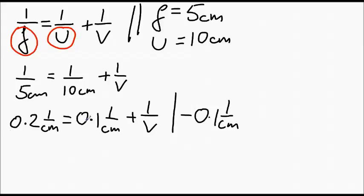If we do so, you've got 0.2, 1 over centimeters, minus 0.1, 1 over centimeters on the left-hand side, which is going to be equal to 0.1, 1 over centimeters minus 0.1, 1 over centimeters. So that will disappear and leave you on the right-hand side, 1 over V.